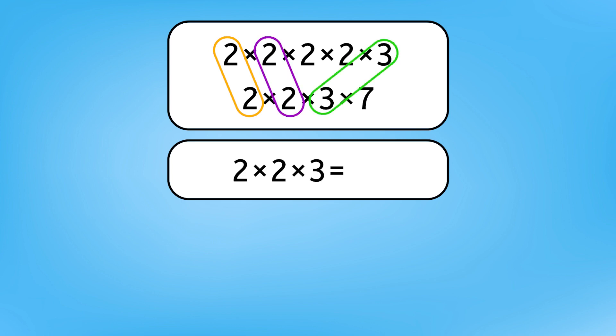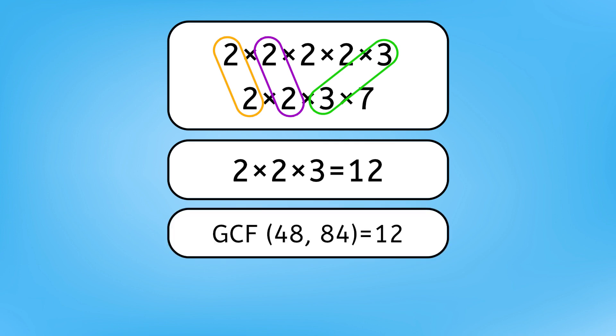Because prime factorization is a breakdown of a number into its fundamental building blocks, we can compare those building blocks to find which ones they have in common. When we multiply all the prime factors they have in common, we're actually finding the largest shared piece of these numbers, also known as their greatest common factor. 2 times 2 times 2 is 4, and 4 times 3 equals 12. So the GCF of 48 and 84 is 12. We could put 12 animals in each pen.